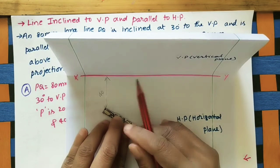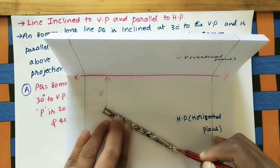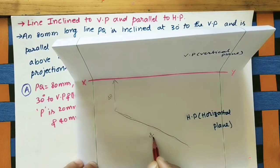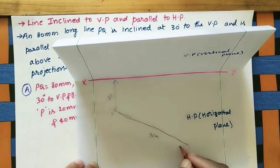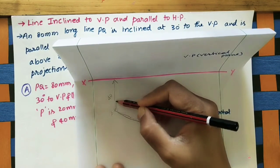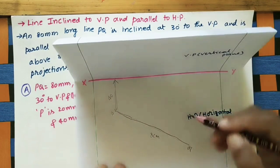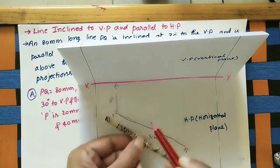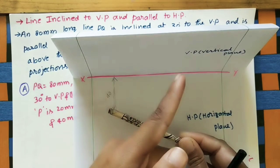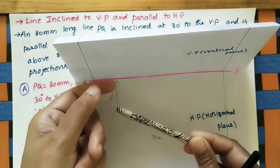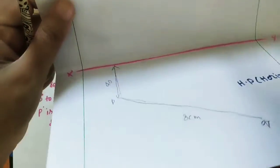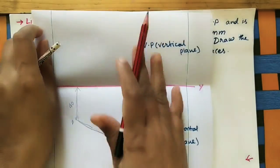At 40 mm, we can see this inclined line in the top view. The line length is 8 cm — marking small p and small q in the top view. True length is 8 cm. After the top view, draw the front view. The front view appears 20 mm from the XY line on the vertical plane.